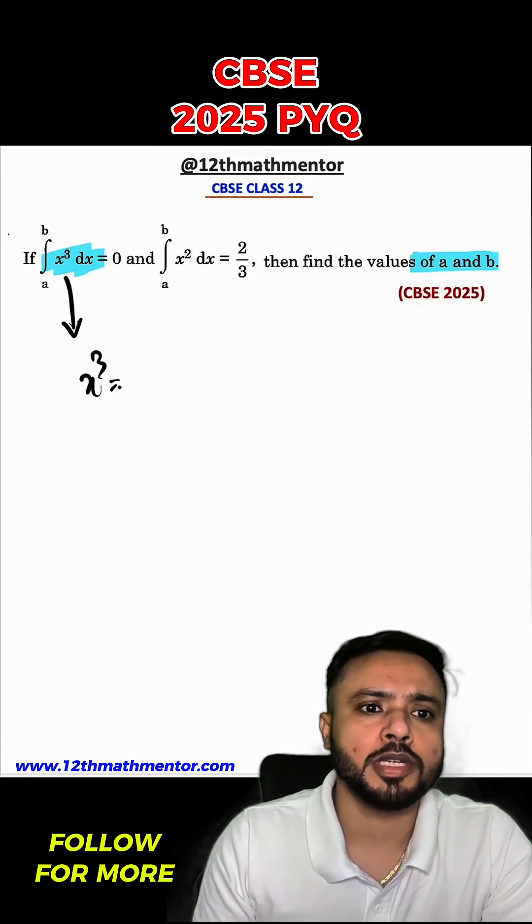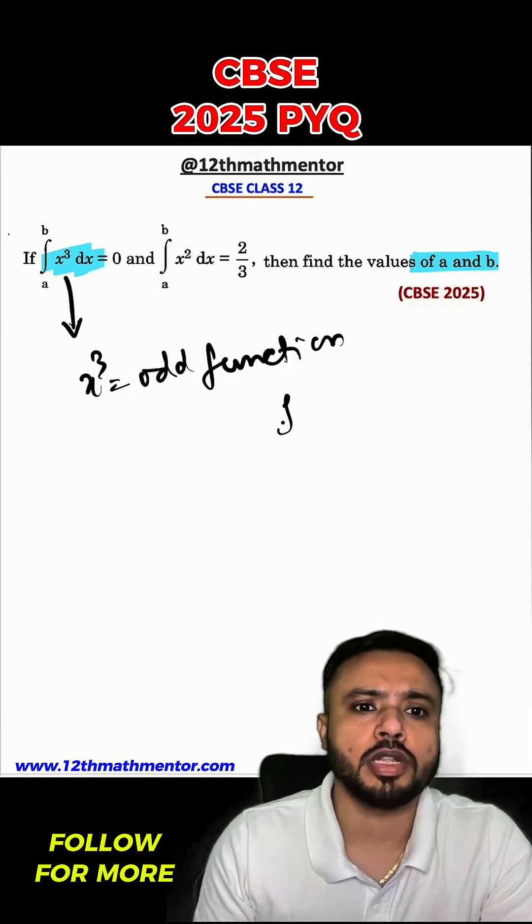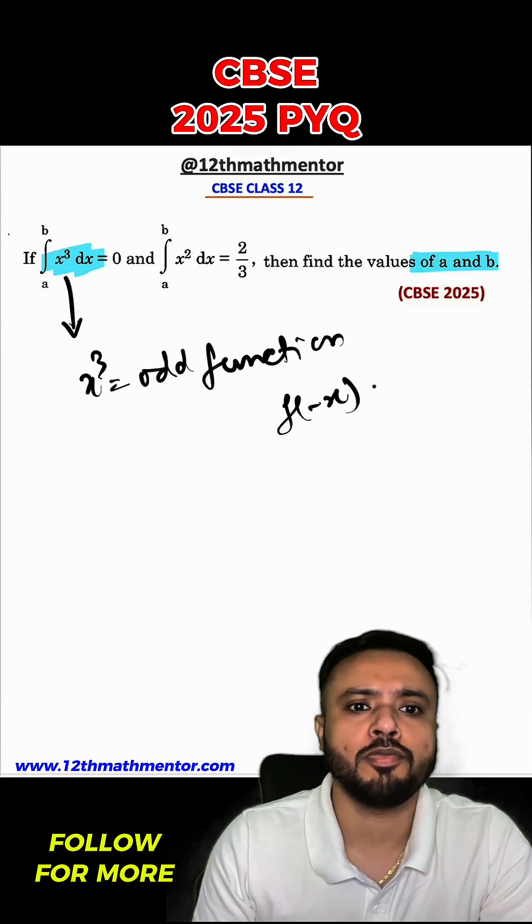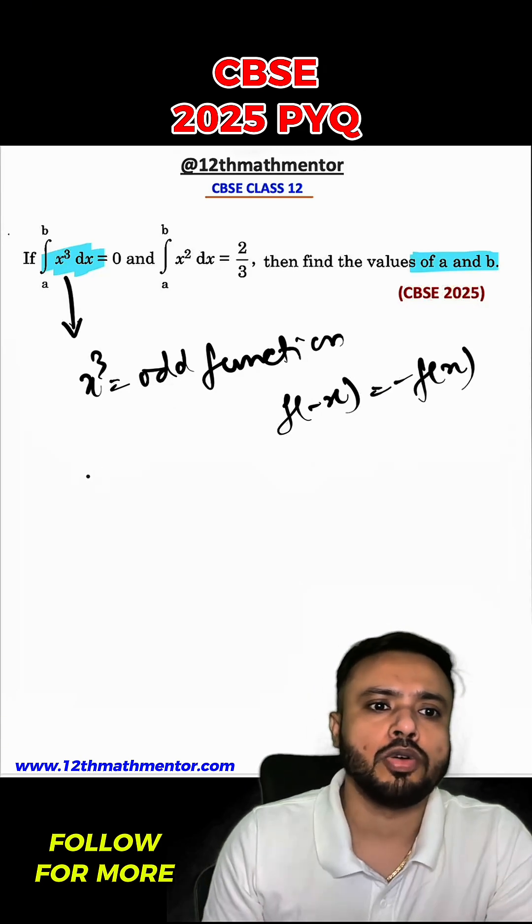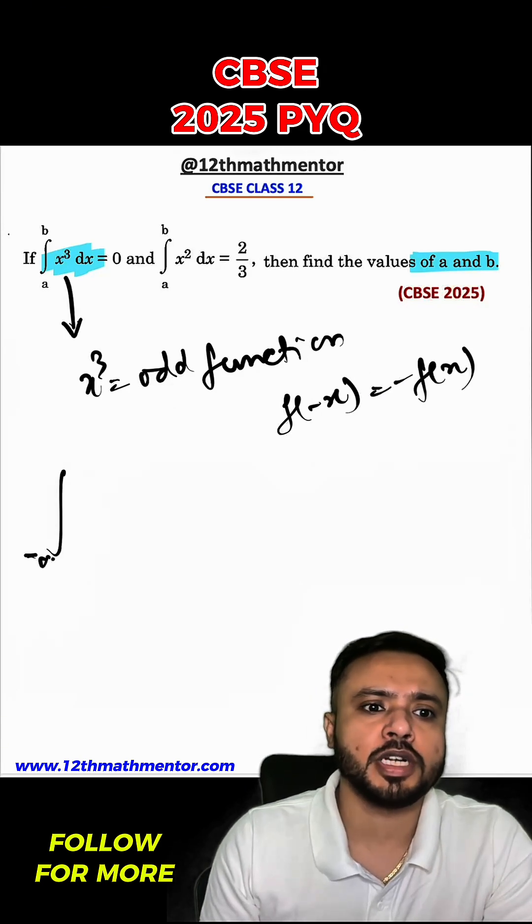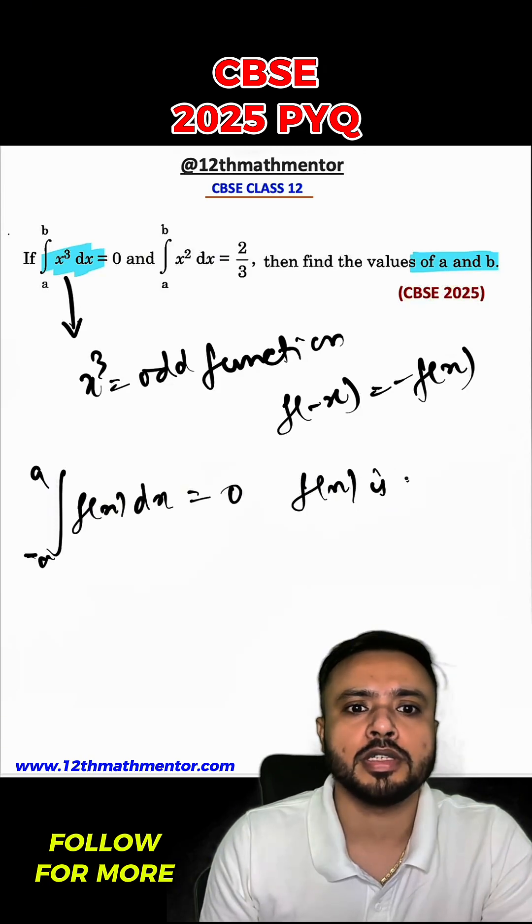If you observe this, the x³ is basically an odd function. An odd function is a function where f(-x) = -f(x). We all know a property of definite integral which states that if negative a to a f dx will be equal to 0 when f is odd.